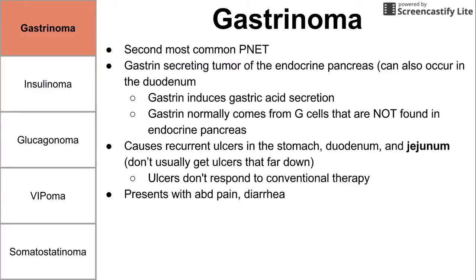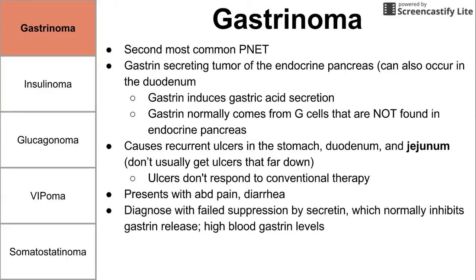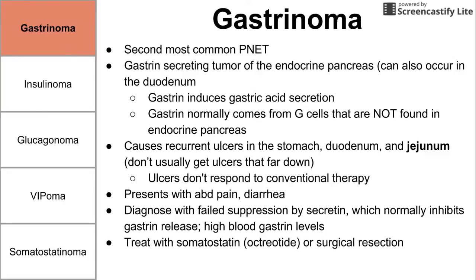Patients present with abdominal pain and diarrhea. These gastrinomas cannot be suppressed by secretin, which normally inhibits gastrin release, and you also see high blood gastrin levels to diagnose. You can treat gastrinomas with somatostatin — the synthetic form is called octreotide — or you can surgically resect the parts of the endocrine pancreas secreting gastrin. This collection of symptoms is called Zollinger-Ellison syndrome, a term you should associate with gastrinoma or abnormal secretion of gastrin.